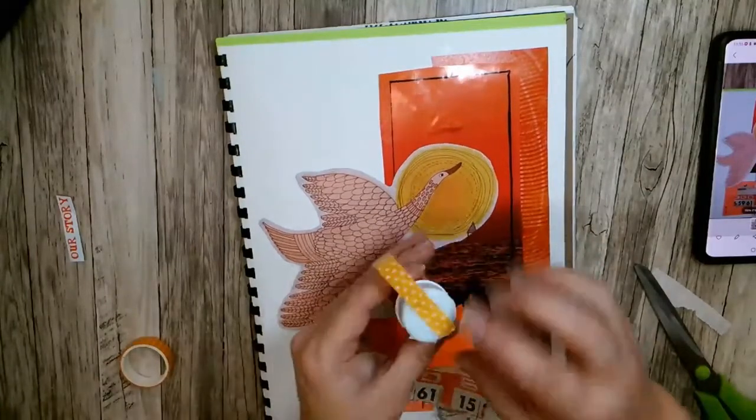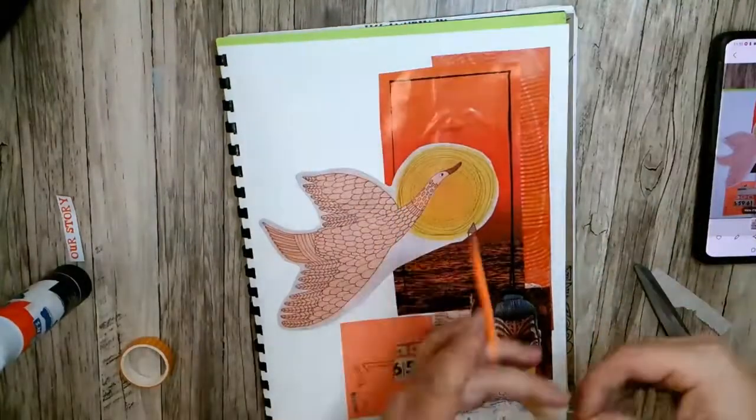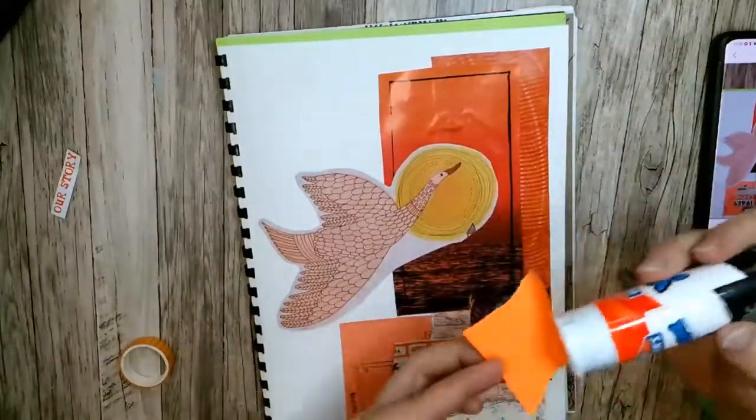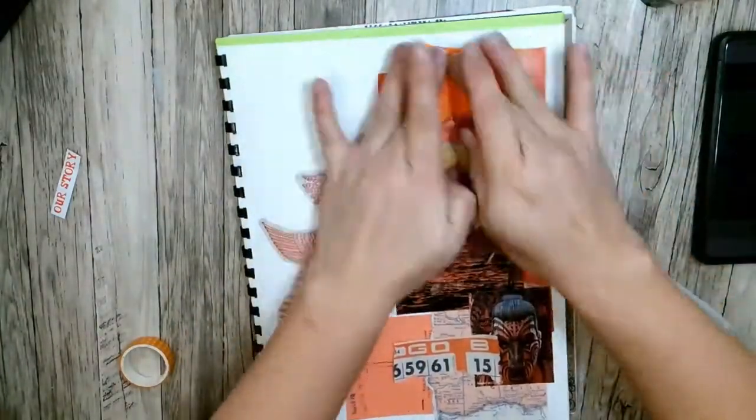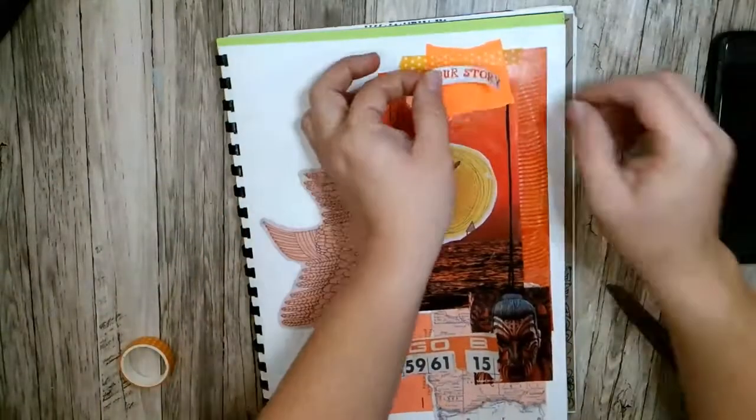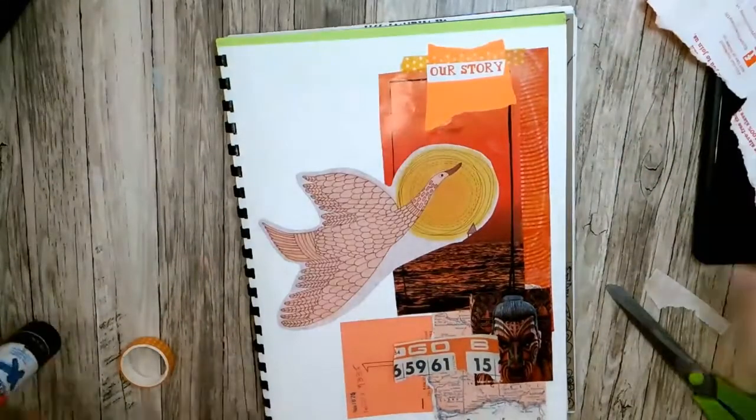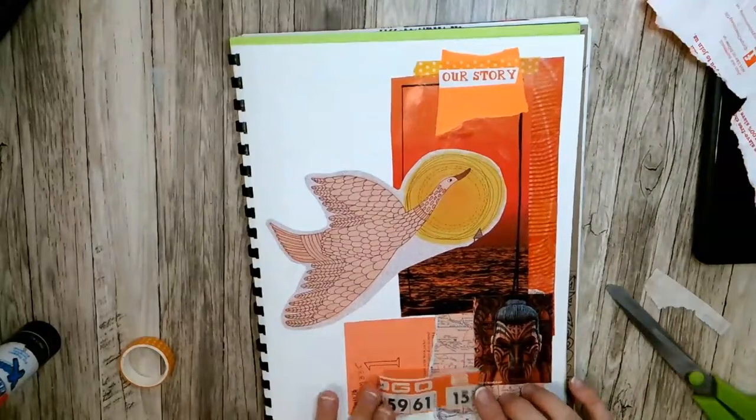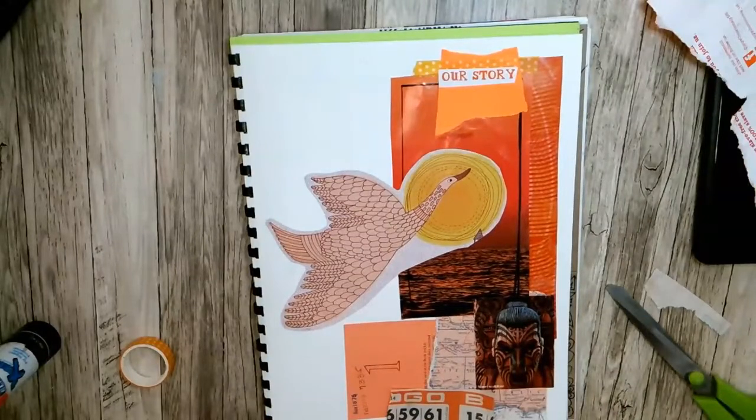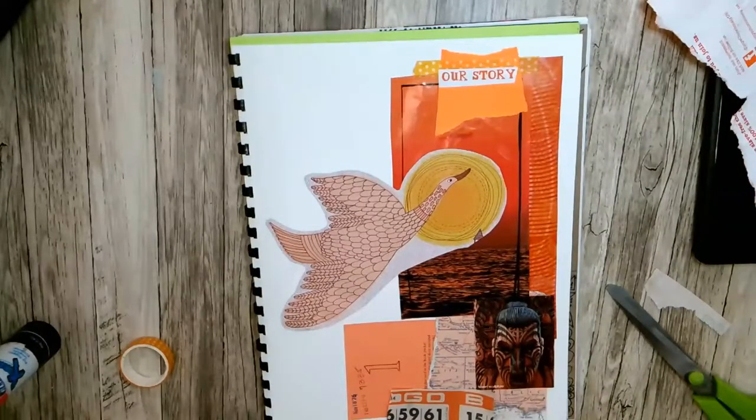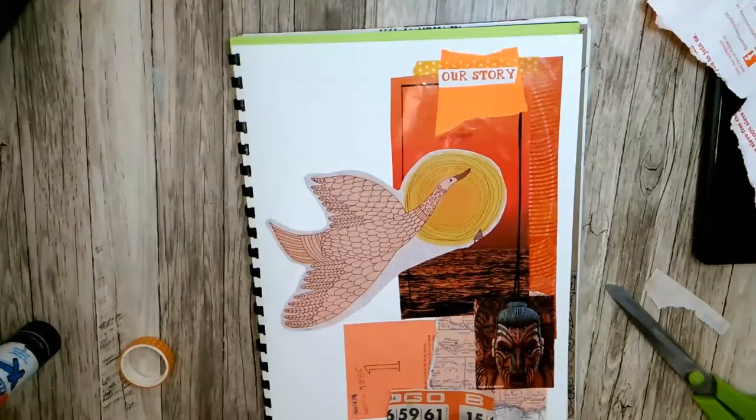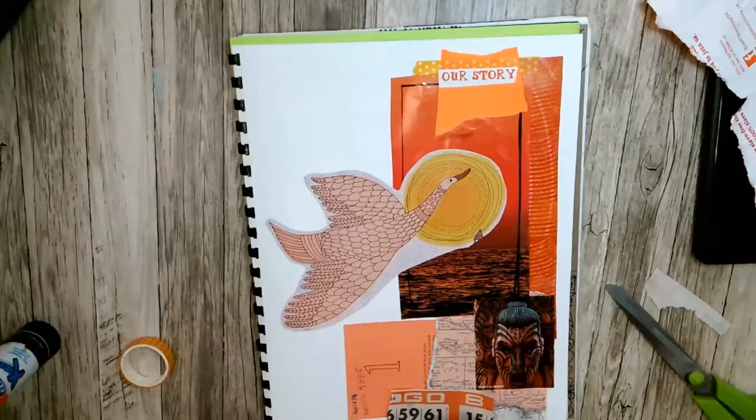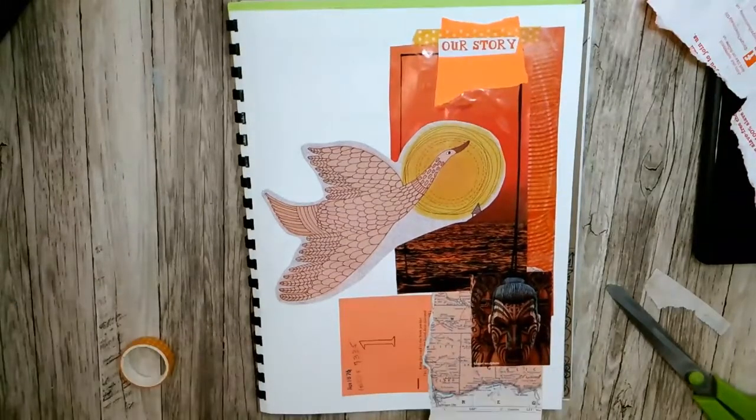Anytime I use washi I always put tape on the back, so even though I am using washi and it's tape, washi is not very sticky so I make sure that I put glue stick on the back. I did find these words in orange which I really liked, so yeah you can also cut out letters from a magazine that are in that color and then you can kind of do like one of those ransom notes and you could write the word orange.